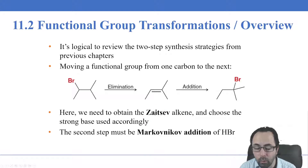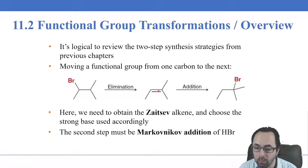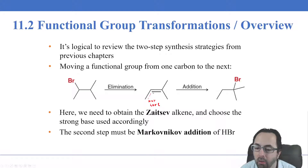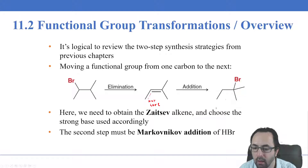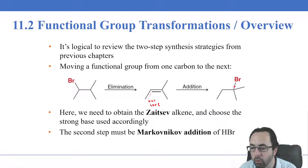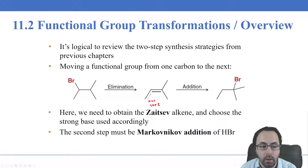Remember that when we do an elimination we have two potential regiochemical outcomes. We could have the Zaitsev product where the double bond is more substituted. We don't want to put the double bond at the less substituted position — the Hofmann product — we want the Zaitsev one because we're trying to get the bromine onto the tertiary carbon. Then we do an addition, and again we have to be careful about regiochemistry.